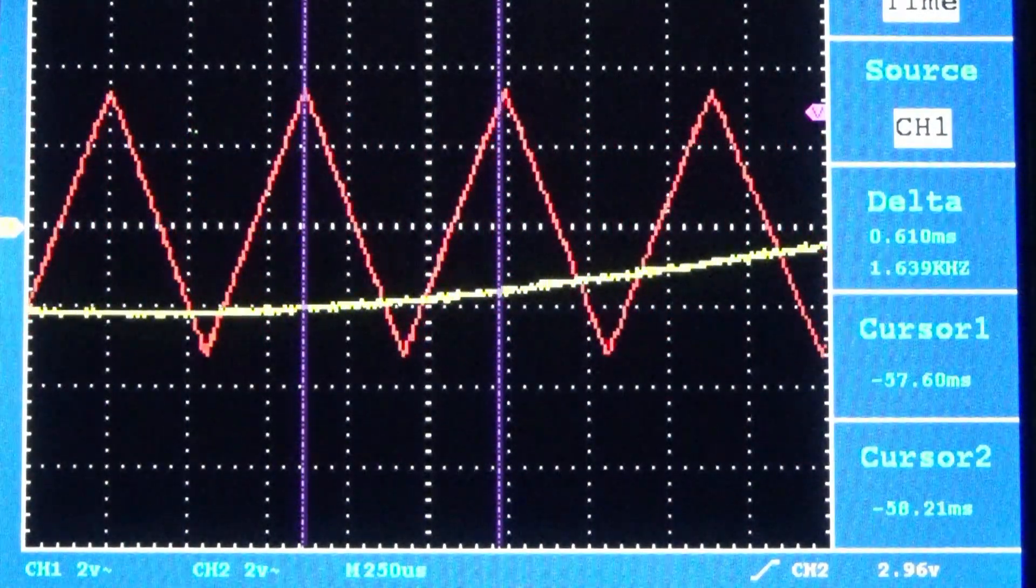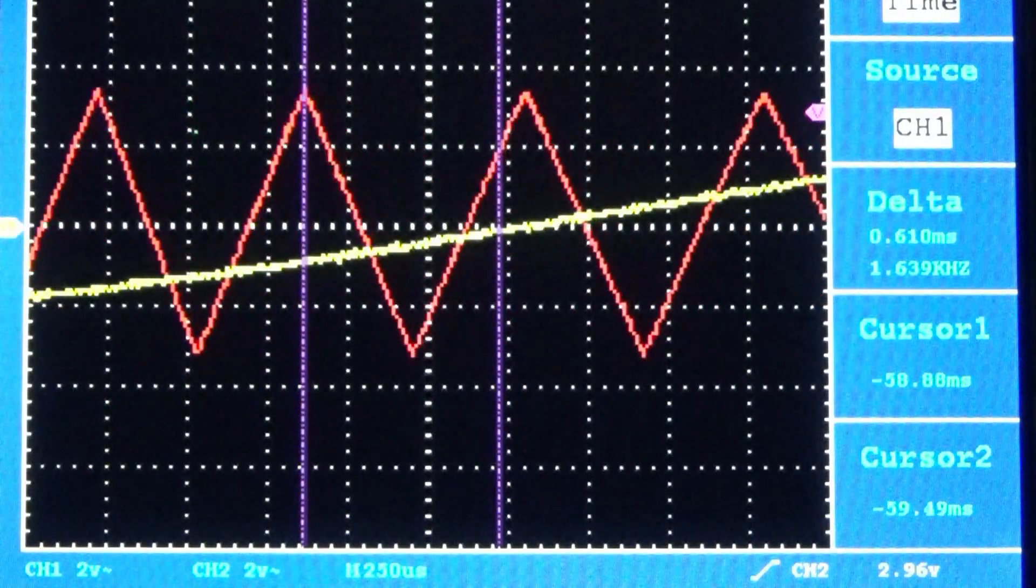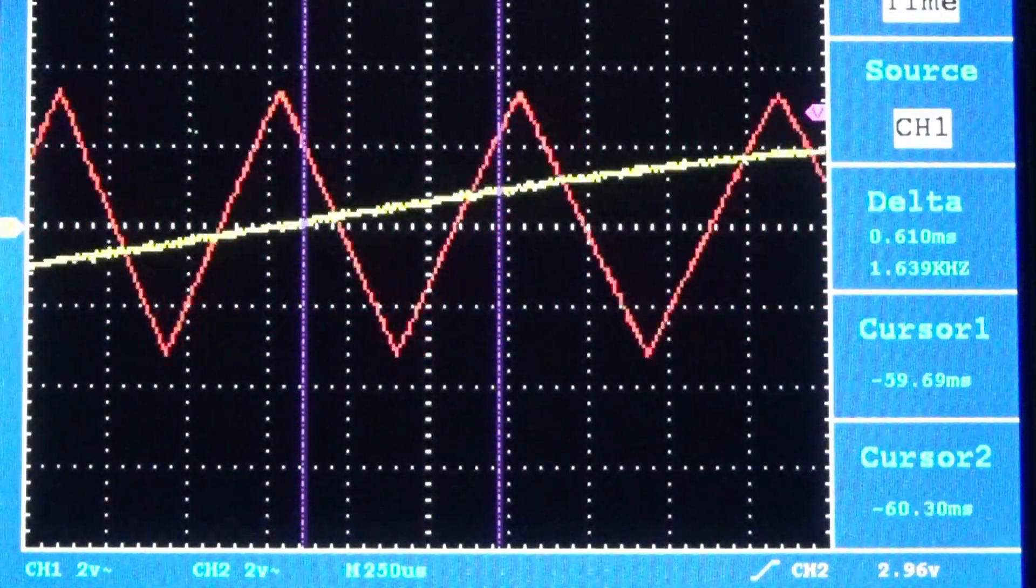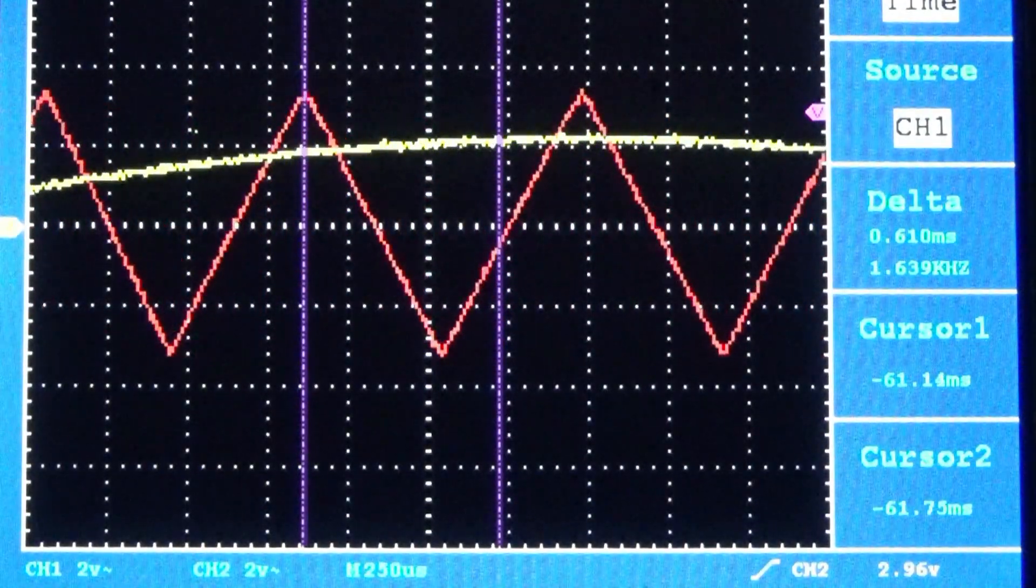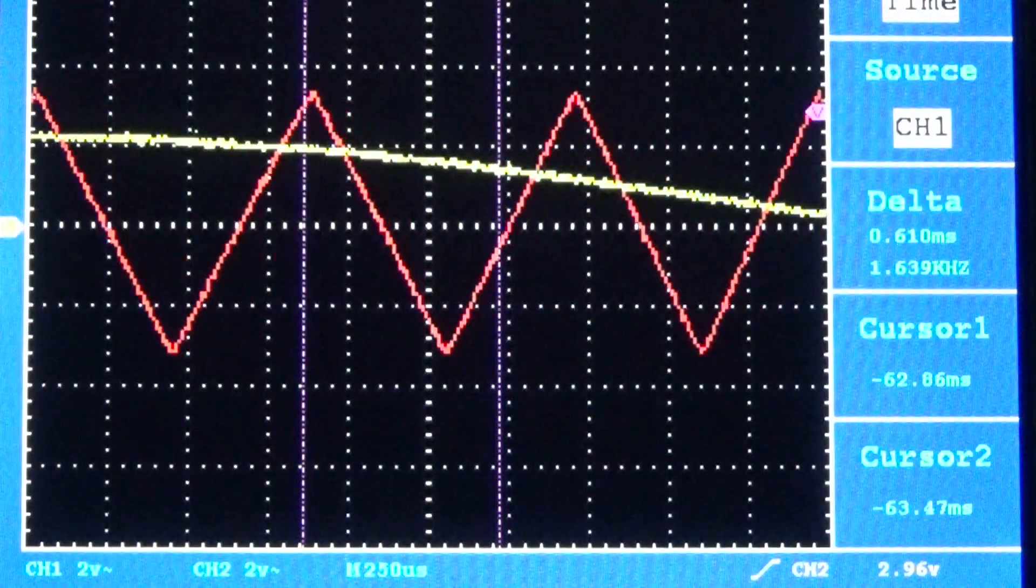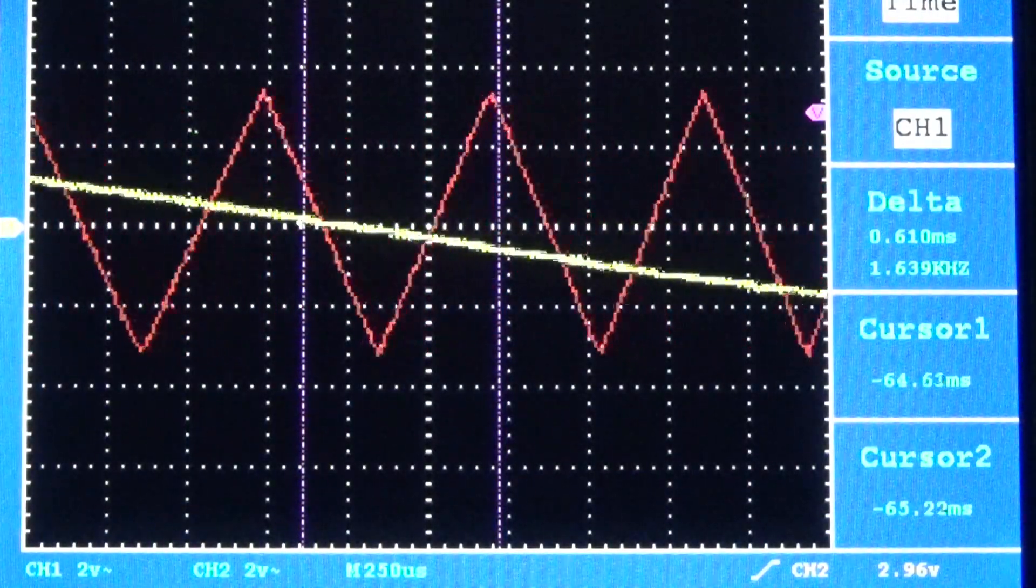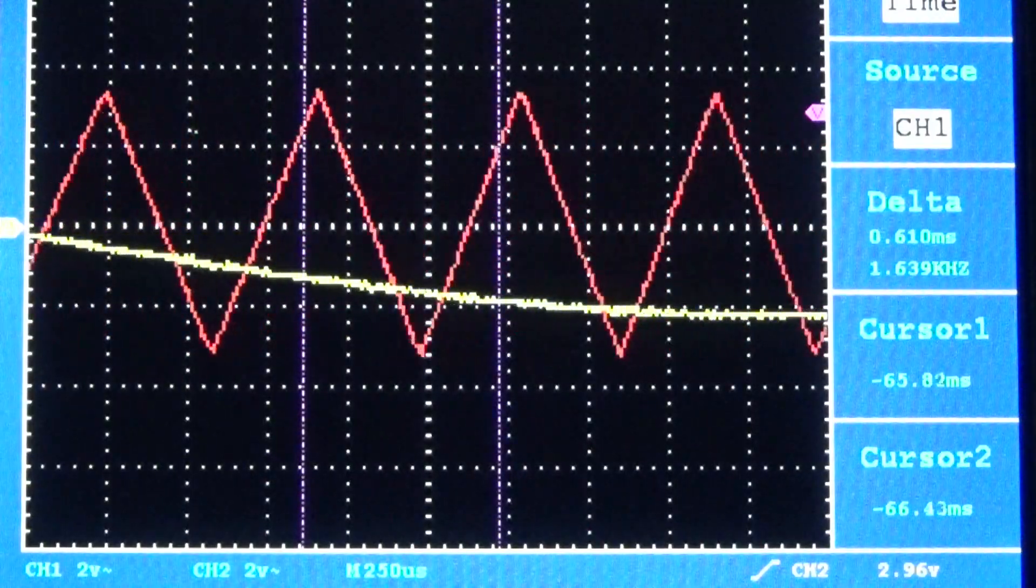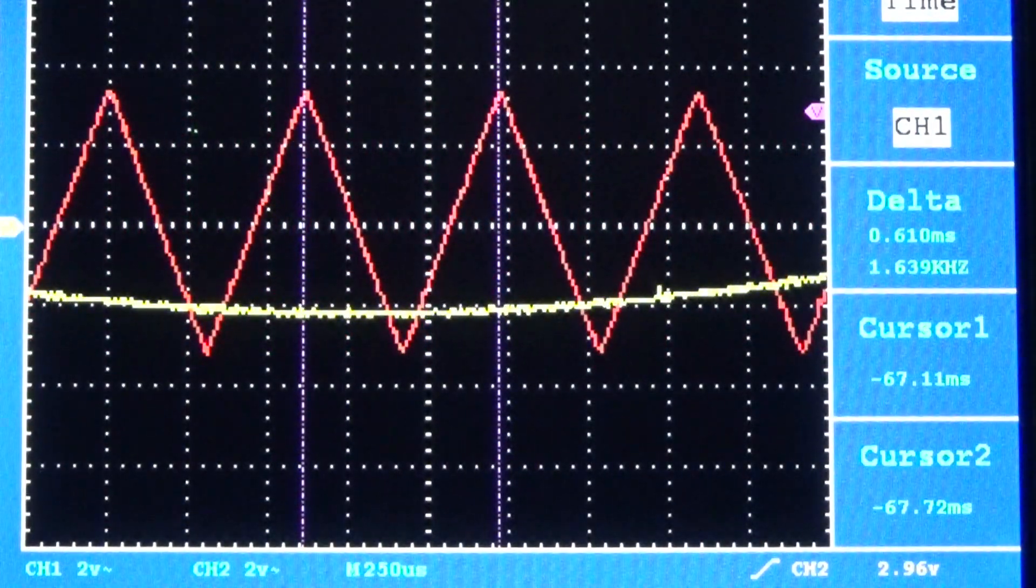We'll start from the minimum amplitude of the sine wave and then move across the periodic wave. We see as the sine wave's amplitude increases, the frequency out, the red triangle wave, decreases. As the sine wave decreases in amplitude, we return to the same value that we started with at the minimum.